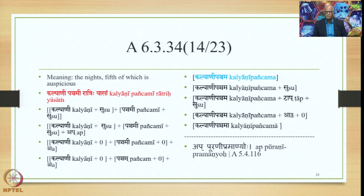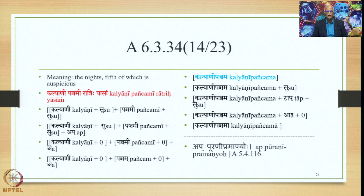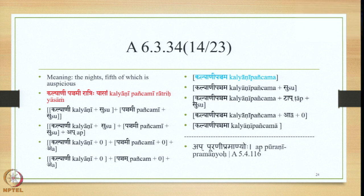The Samasanta Pratyaya Ap gets added by the Sutra Appurani Pramanyoho, so we have Kalyani plus Su plus Panchami plus Su, and the Samasanta Pratyaya A is added. Then Pratipadika Saudhnya applies — Supodhatup Pratipadika Yoho — giving Kalyani plus zero plus Panchami plus zero plus A. Because of A, the final E in Panchami gets deleted by Seta Cha, giving Kalyani plus zero plus Pancham plus zero plus A. Joining them gives the form Kalyani Panchama. Adding the suffix Su along with the feminine suffix Tap gives Kalyani Panchama plus Tap plus Su, and deleting Su by the Sutra Halgya Bhyodirghat gives Kalyani Panchama plus A, yielding the final form Kalyani Panchama Ratrihi or Ratrayaha.